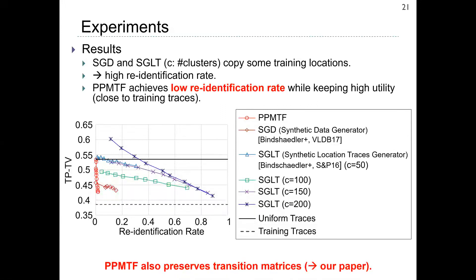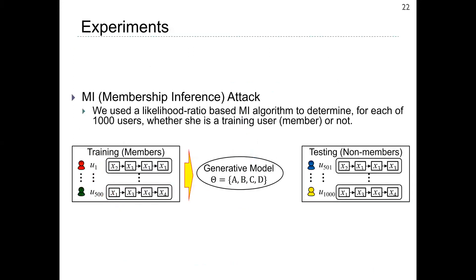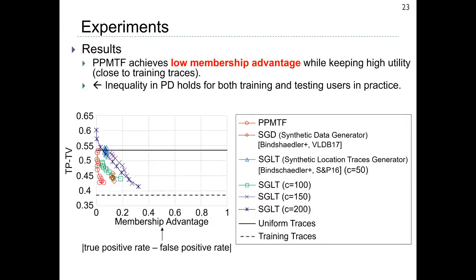We also showed that PPMTF preserves transition matrices; for more details, please see our paper. To evaluate privacy further, we also considered the membership inference attack. We used a likelihood ratio-based MI algorithm to determine, for each of 1,000 users, whether she is a training user or not. The membership advantage is the difference between the true positive rate and false positive rate, so lower is better. We can see that PPMTF achieves low membership advantage while keeping high utility. We consider this is because the inequality in PD holds for both training and testing users in practice.